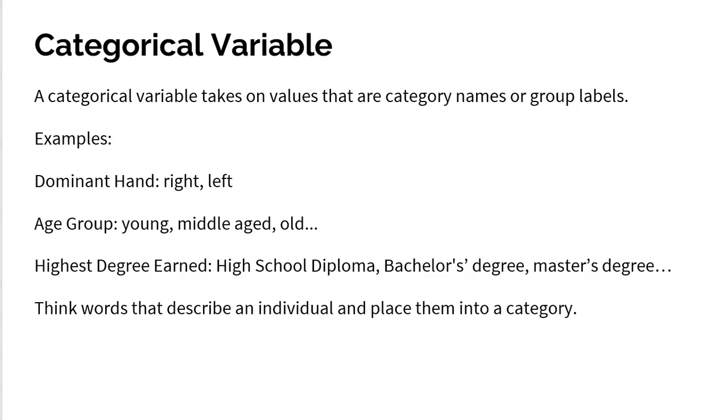Age group. A lot of people want to jump and think age is a number. It is. We'll talk about that in a second. But if you're going to label people not based on their number of their age, but hey, are you young? Are you middle-aged? Are you old? You're giving them a label. That's a categorical variable.